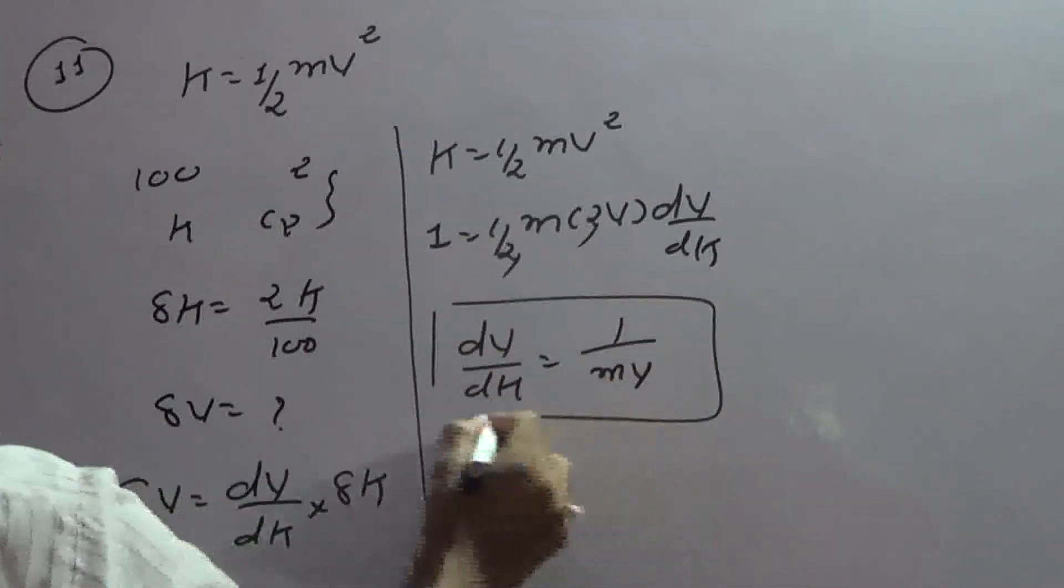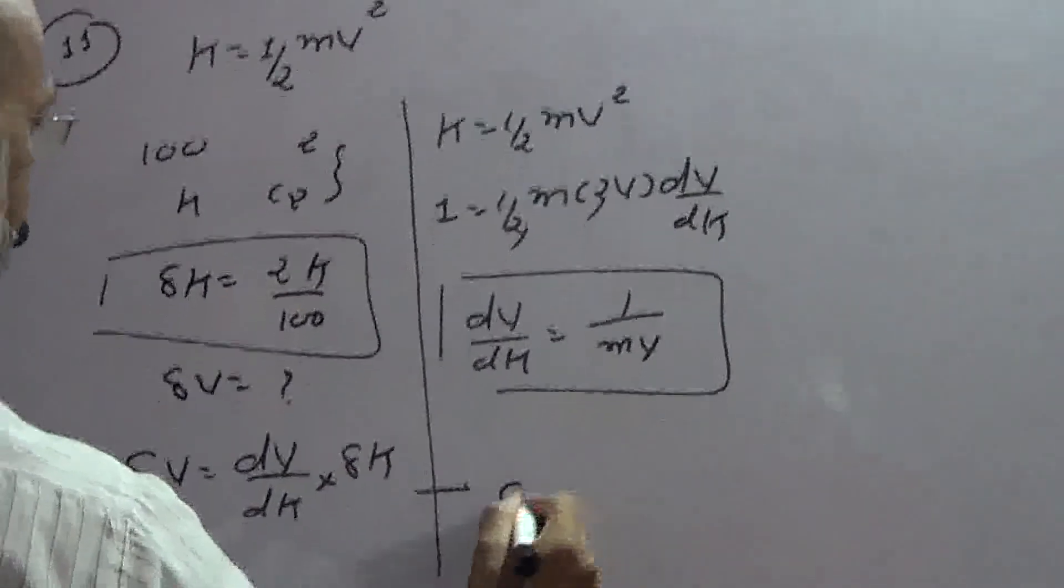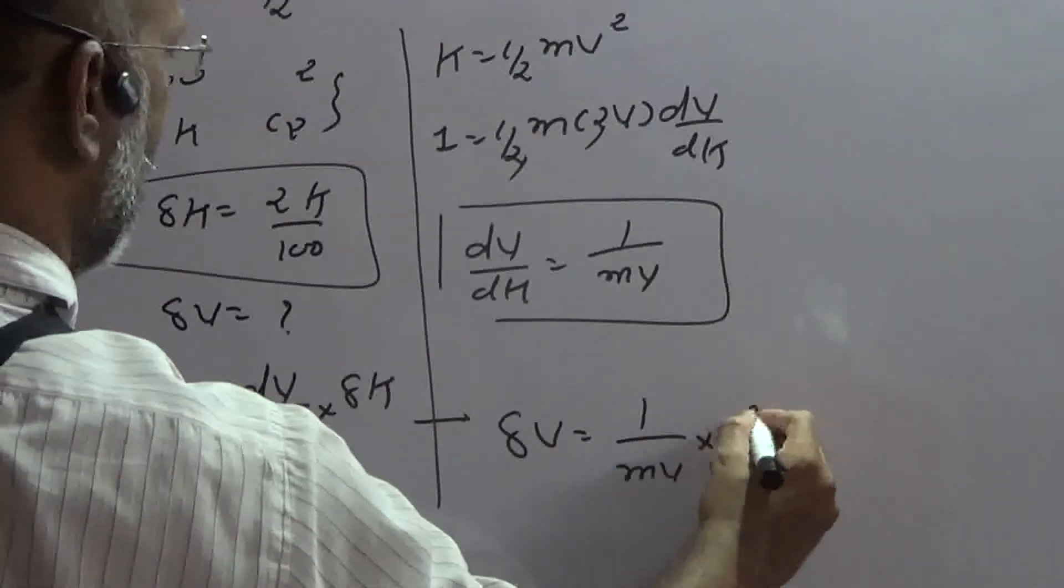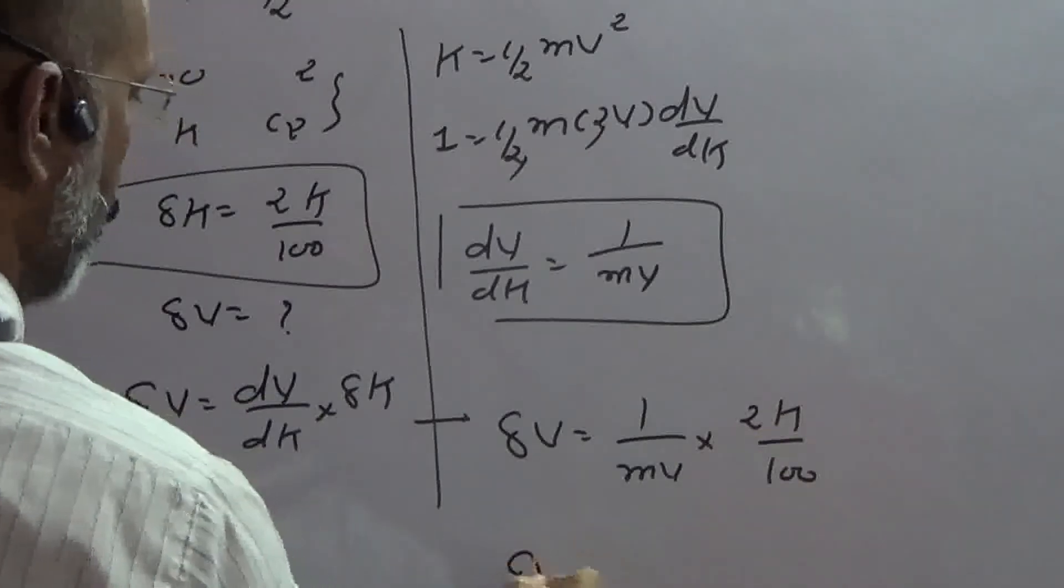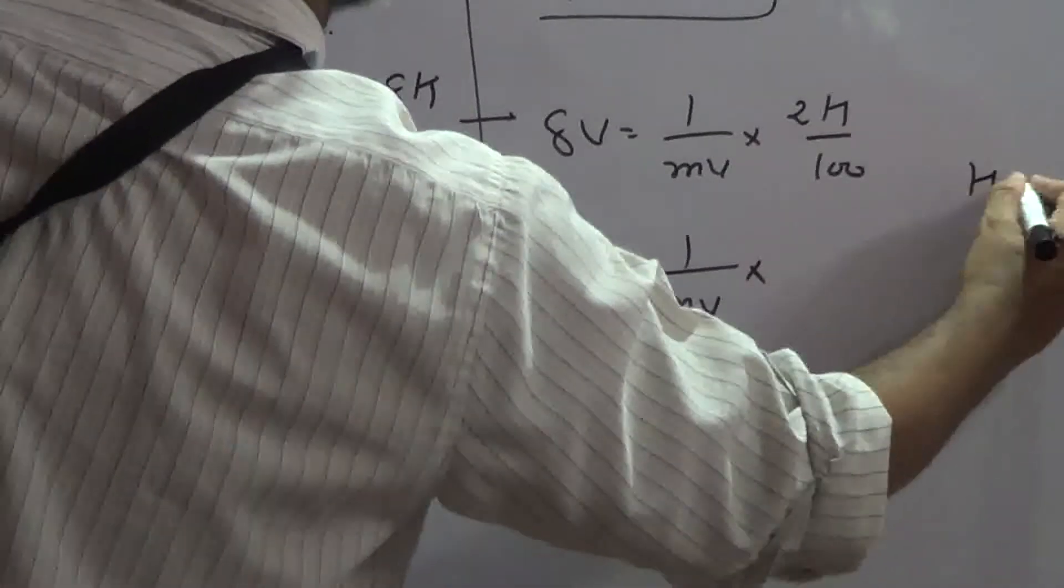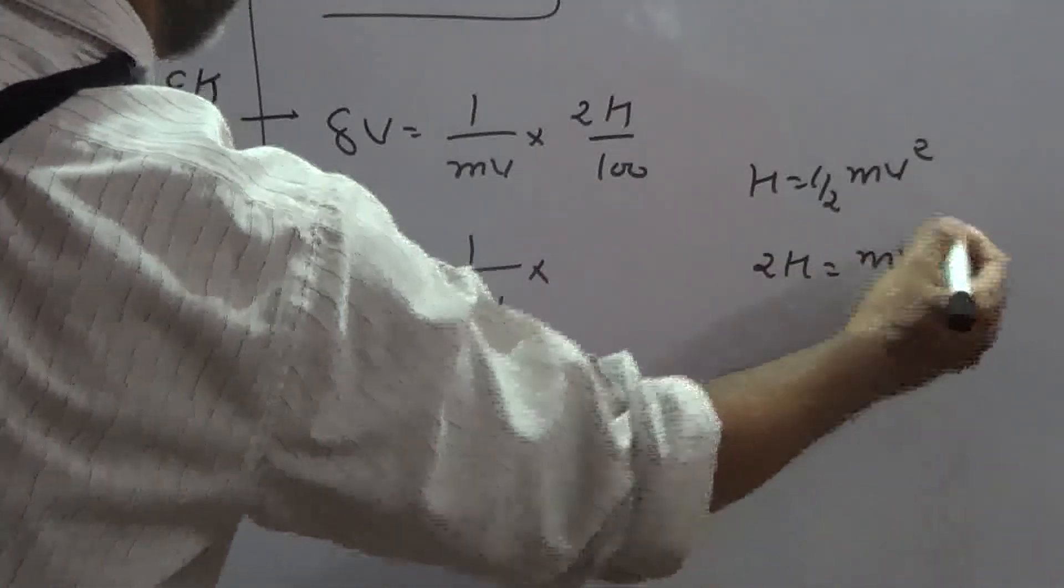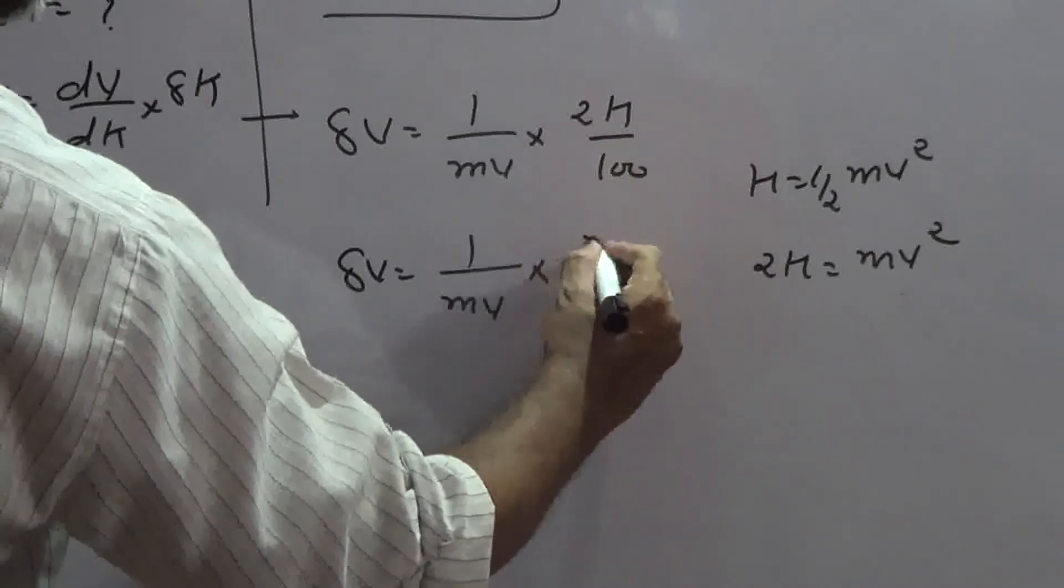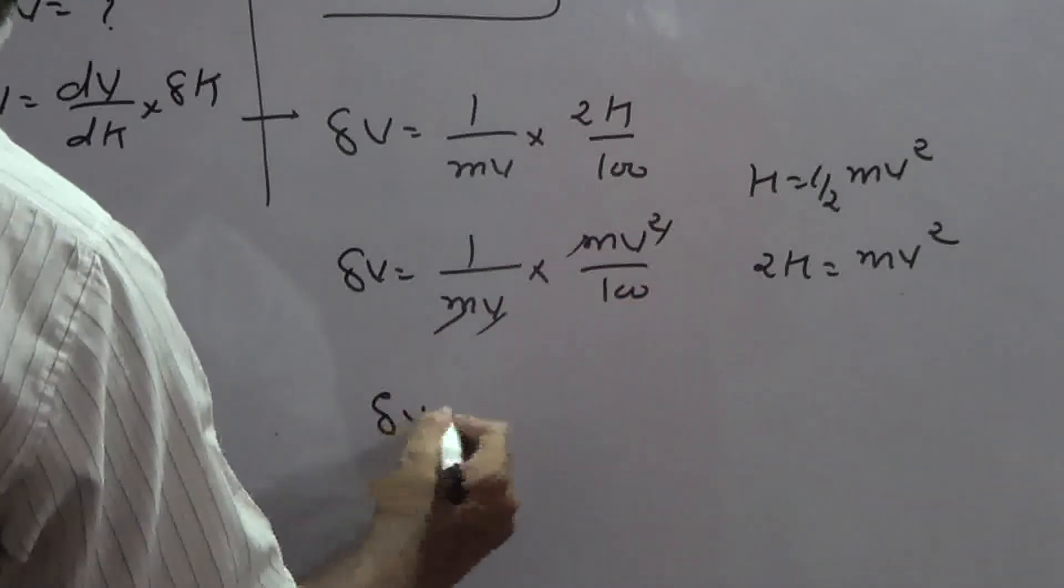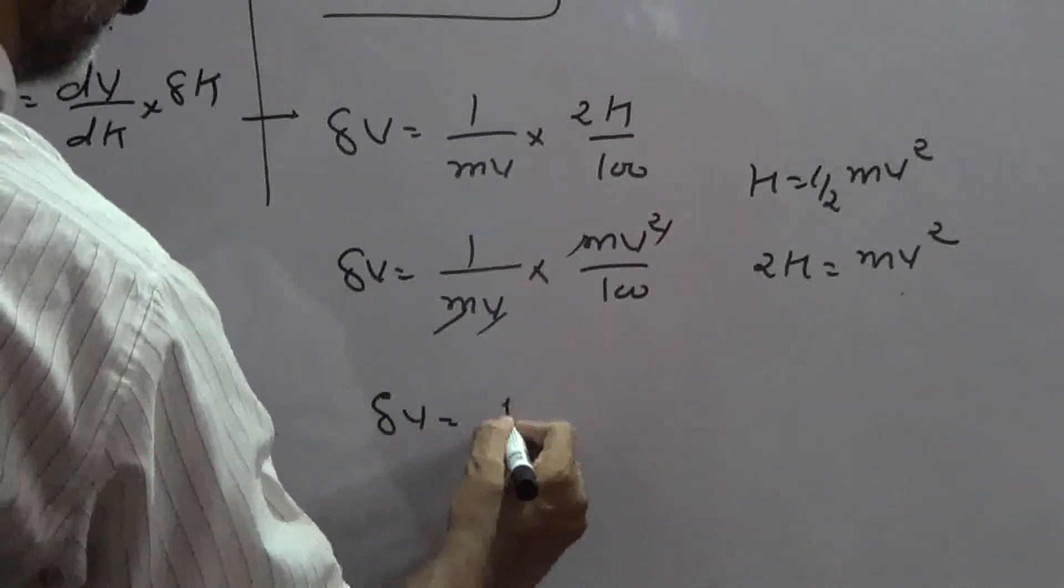Ab bachho, dv by dK bhi hai mere paas. And already mere paas delta K hai. Thus, delta V equals to dv by dK into delta K. Cancel, one of the V is cancelled. So delta V equals, V into delta V equals 2.